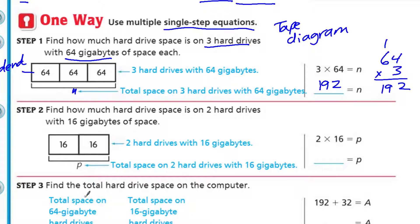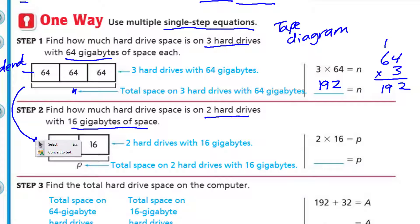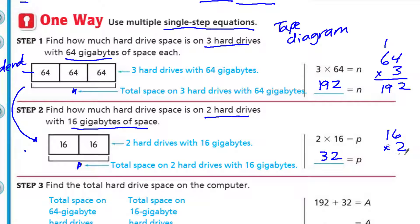Step 2: find how much hard drive space is on two hard drives with 16 gigabytes of space. Just like the previous problem, we're doing the same kind of thing except with different numbers. We have 16 and 16, because that's what we have and we have two of them. They've just changed the variable — the letter makes no difference. Doubling 16 — that's just 32 if you know your doubles. So we have 32 gigabytes for these two hard drives total.